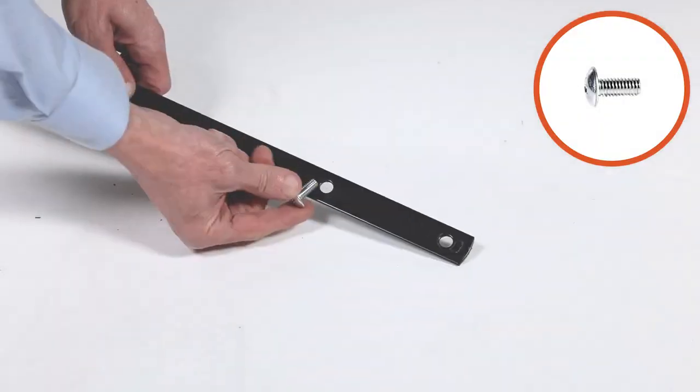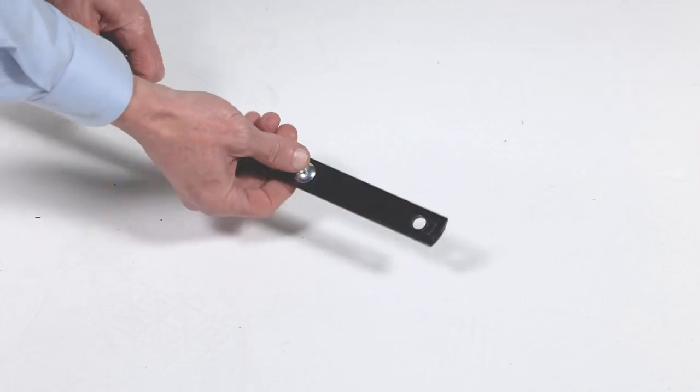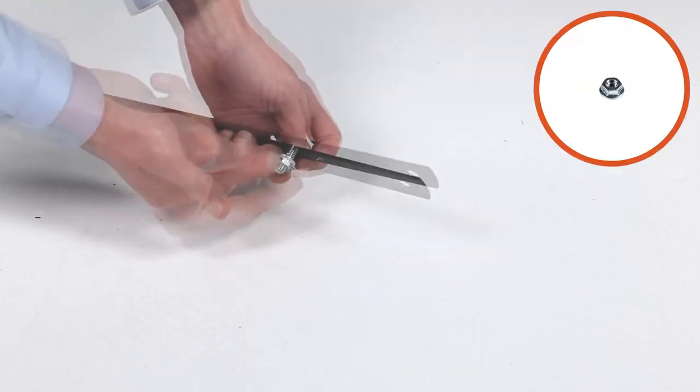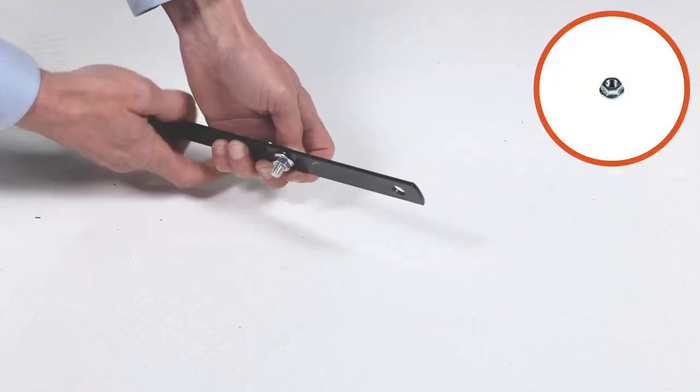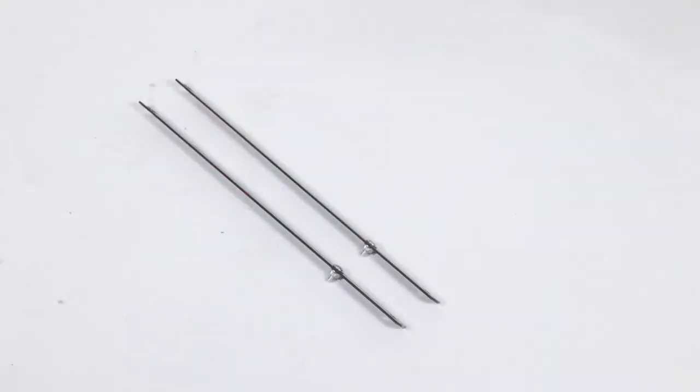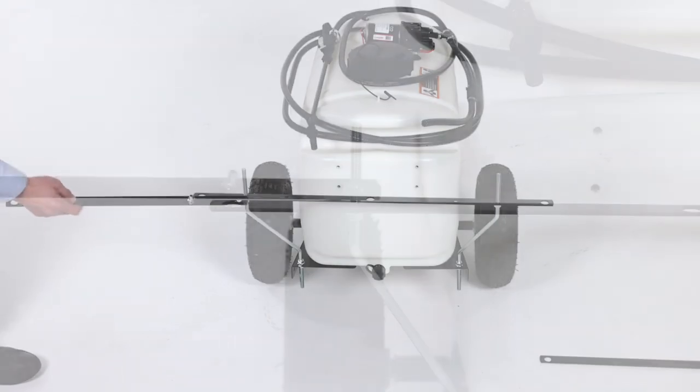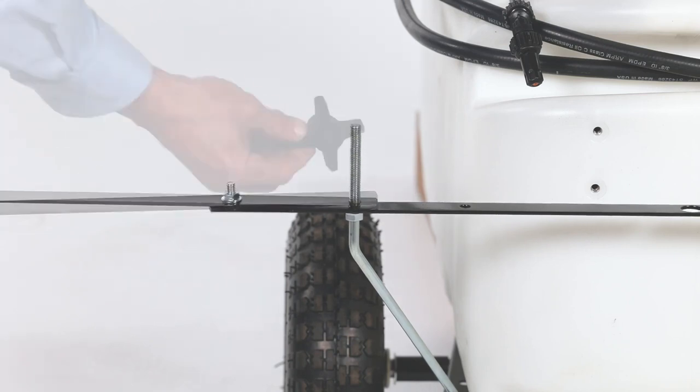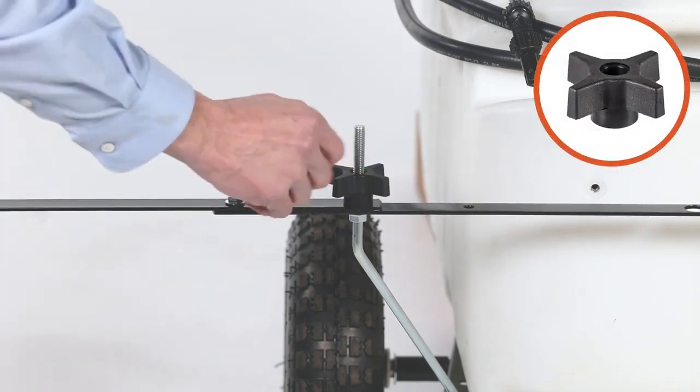Now align them with the boom assembly, and loosely secure them with a locking knob, Part N.